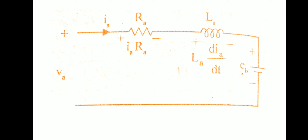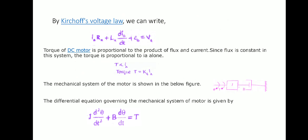The voltage across the resistance is Ia × Ra, the voltage across the inductance is La × dIa/dt, and Eb is the back EMF across the motor. Applying Kirchhoff's voltage law, which states that the total voltage across the system equals the sum of individual voltages, we can write: Ia·Ra + La·(dIa/dt) + Eb = Va.